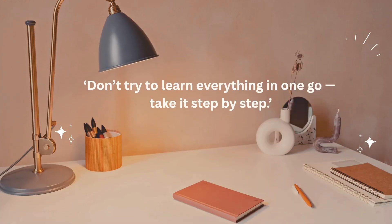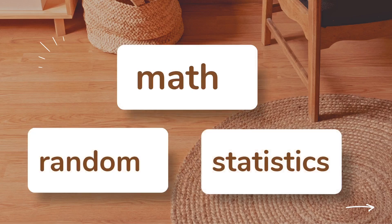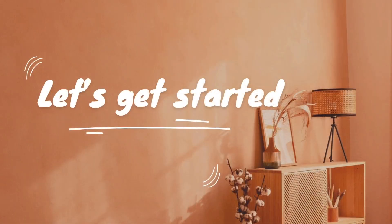He began with the math module, then came to random module. Finally Sid dived into the statistics module. And if Sid can do it, so you can. Based on your syllabus, we must have the knowledge of these three different modules. The first one is math, the second one is random and the third one is the statistics module.